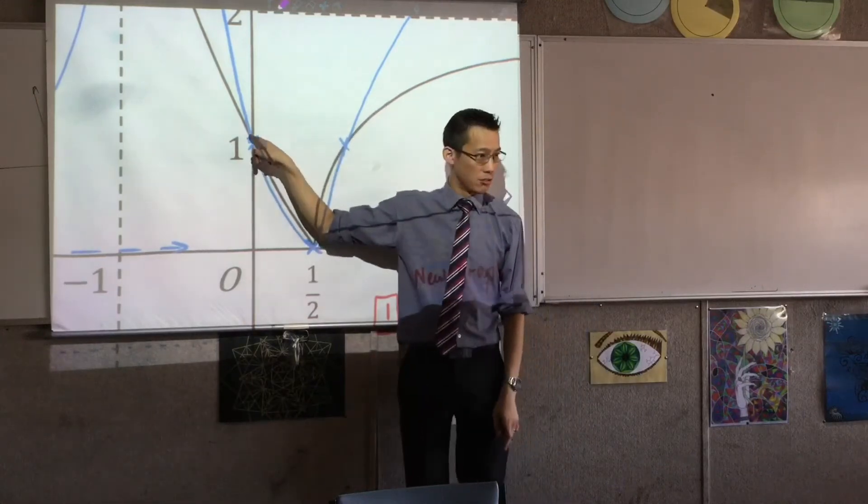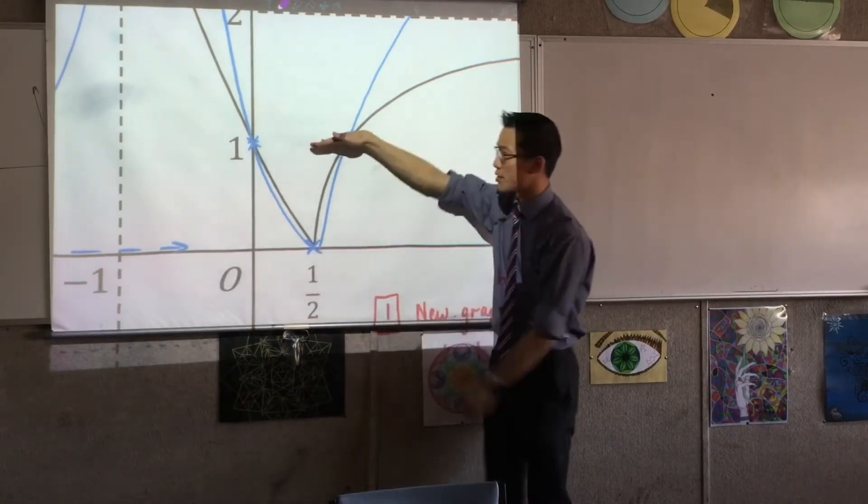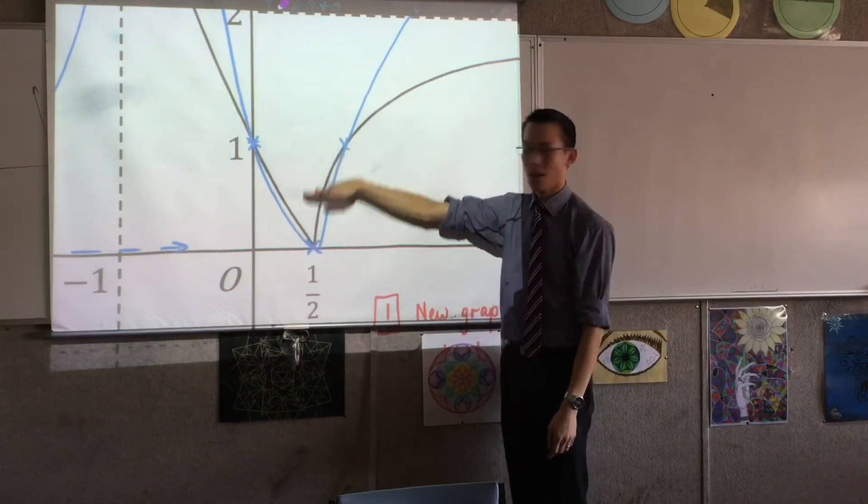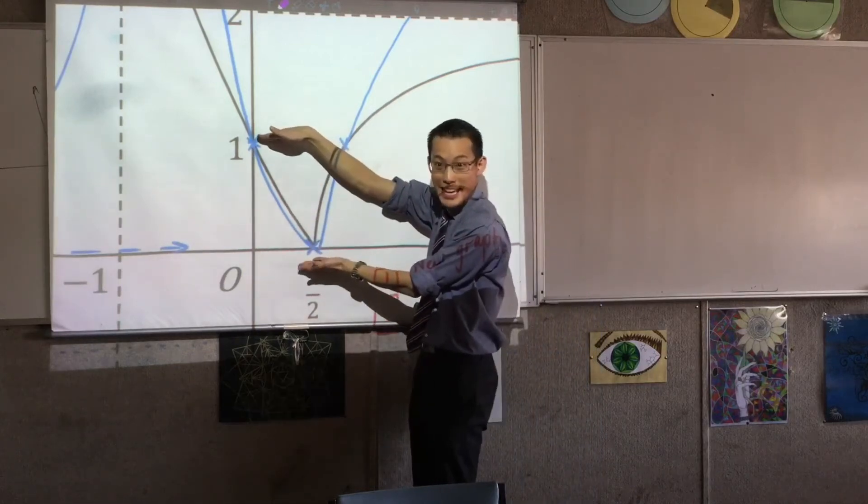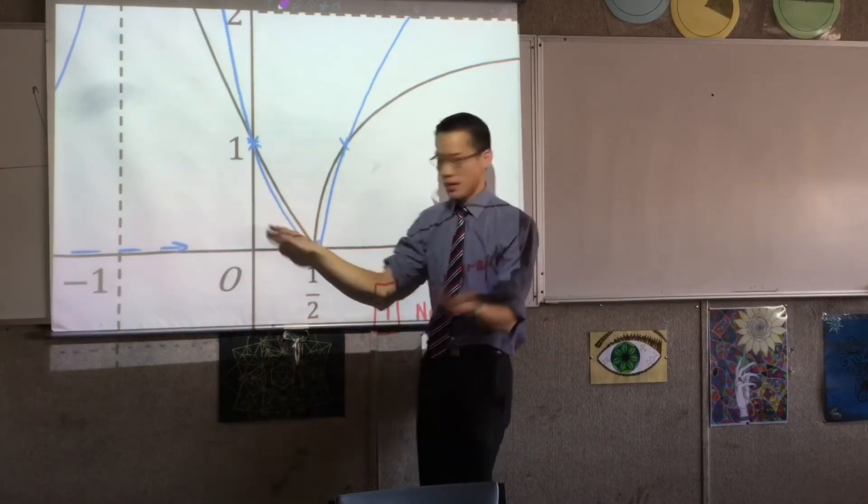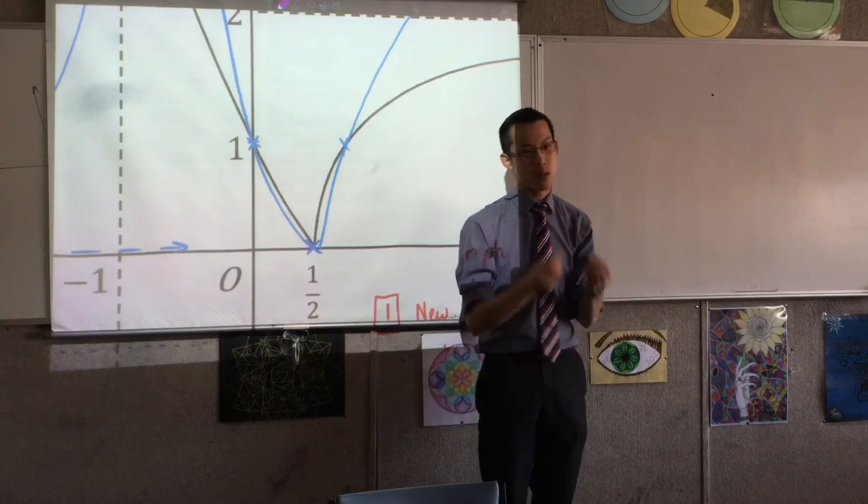So these parts of the graph here, the black is my original, and these parts are important because their ordinates, the y values, are all below one. All below one. So when you square them, they get smaller. Make sense? So these parts really had to be underneath. I was looking for that.